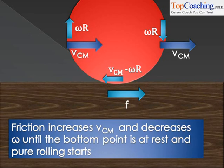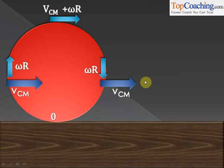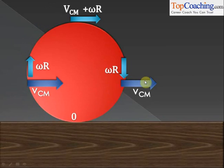Finally, friction increases VCM to such an extent and decreases omega r to such an extent that the velocity of the bottommost point of the ball, VCM minus omega r, becomes zero. Something like this happens. It is at this time when pure rolling starts.